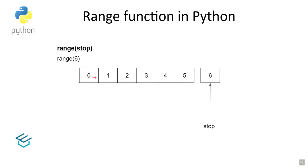For range(6), the values are 0, 1, 2, 3, 4, 5. After 6 there are no more numbers. Here it's 6, and the sequence runs from 0 to 5, like 0 to 5 with 10, 20.